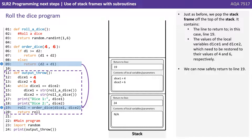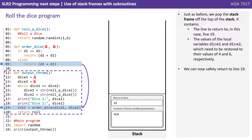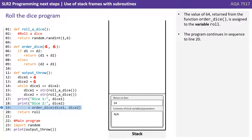Just as before, we pop the stack frame off the top of the stack. It contains the line to return to — in this case line 19 — and the values of the local variables Dice1 and Dice2, which will need to be restored to their values of 4 and 6 respectively. We can now safely return to line 19. The value 6-4 returned from the function OrderDice is assigned to the variable Roll.